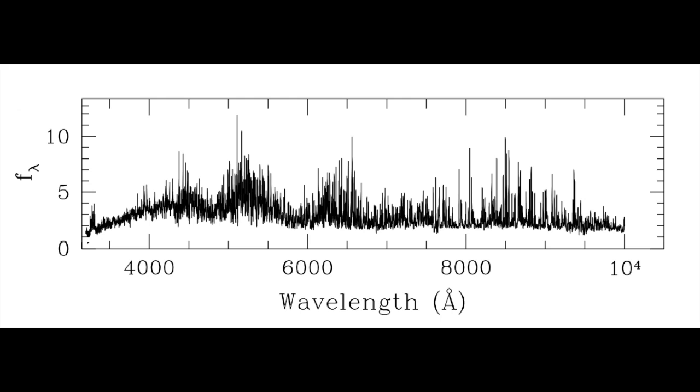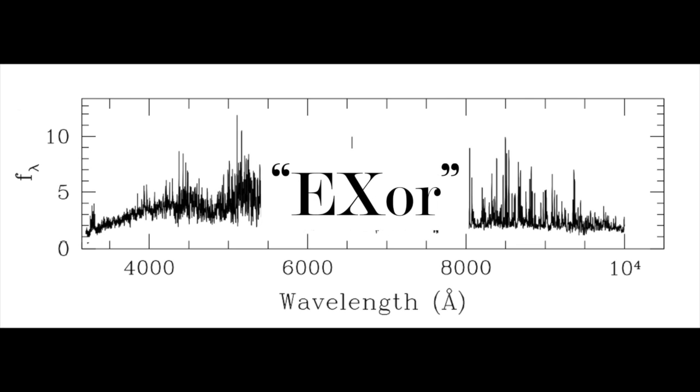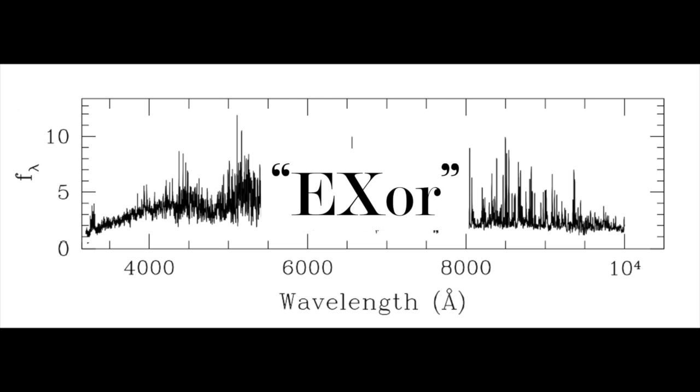Investigation of the literature revealed that spectra like this are typical of a type of variable star known as an EXOR, after the prototype EX Lupi. EXORs are typically found in a quiescent state, but erupt every few years with variable peak luminosities, amplitudes of 1 to about 4 magnitudes, and outburst durations of a few months to a year.